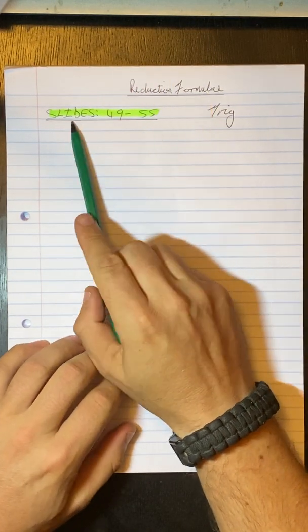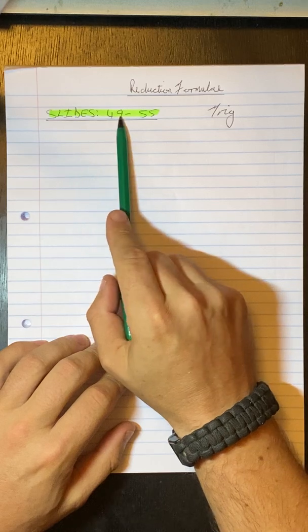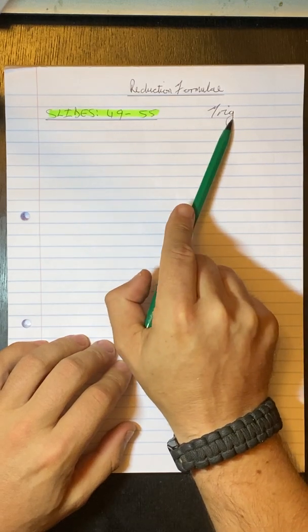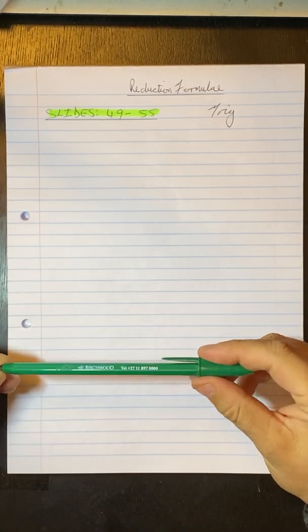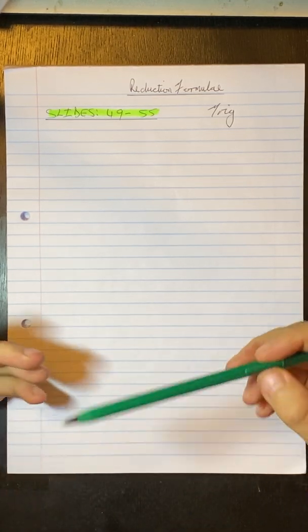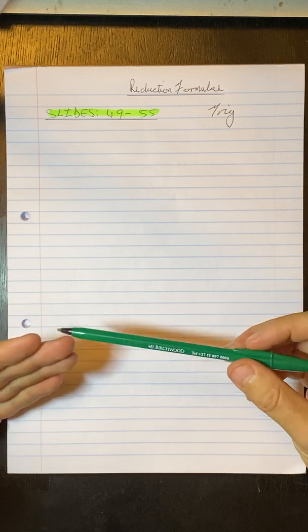Hello Grade 11. So we're continuing with the reduction formula. We're going to be working from slides 49 to 55 from the trig PowerPoint. So what we're going to be dealing today now is not so much like we did yesterday with an unknown angle like theta.